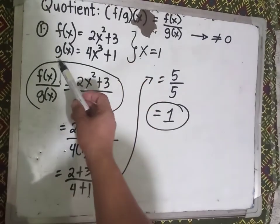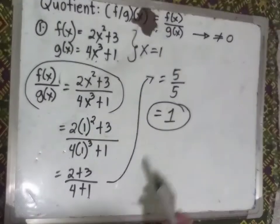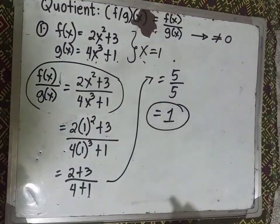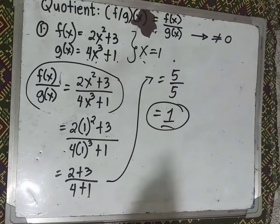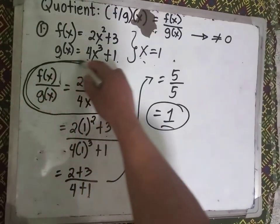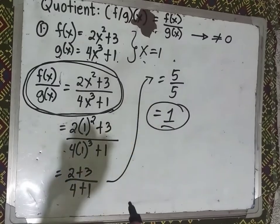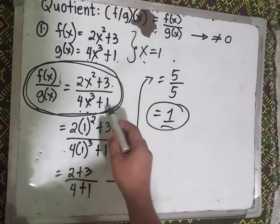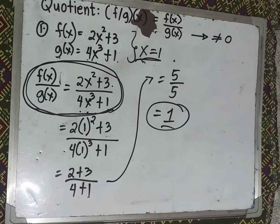So the quotient of f(x) = 2x² + 3 and g(x) = 4x³ + 1 when x = 1 is 5/5 = 1. If no value is given for x, the final answer remains 2x² + 3 over 4x³ + 1.